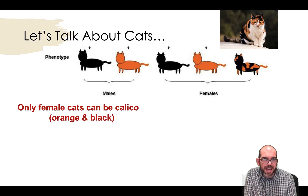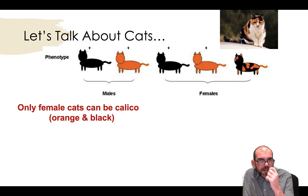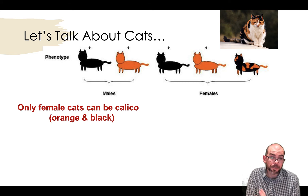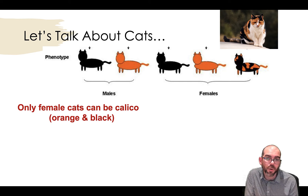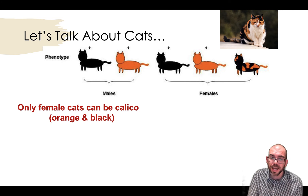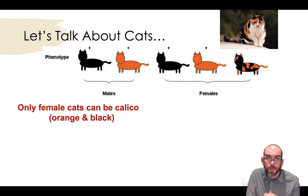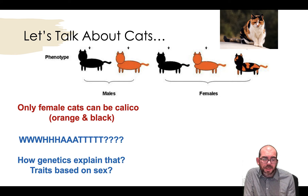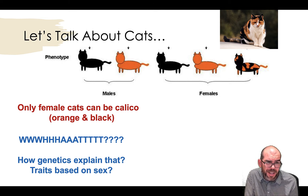Now let's look at cats. There's an interesting scenario when looking at the color of their fur. With males, a cat can be black or orange — I'm just talking about this specific type; yes, I know cats can be other colors. But with females, notice that a cat can be black or orange, or black and orange — something we call calico. Why would something be exclusive to the biological sex of an organism in terms of their genetics? How can we explain this?